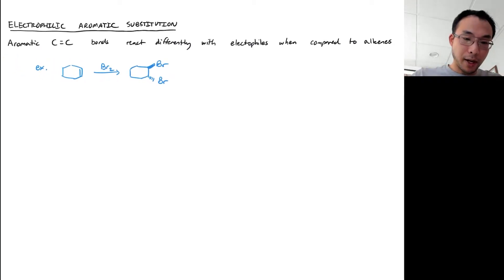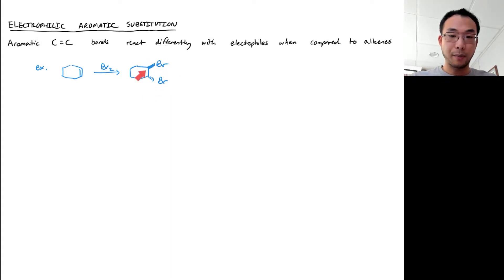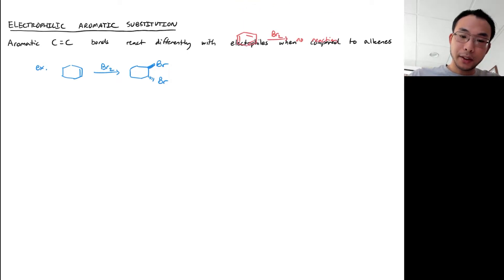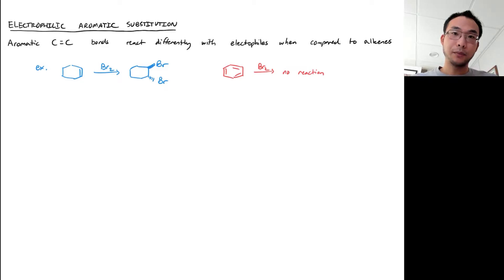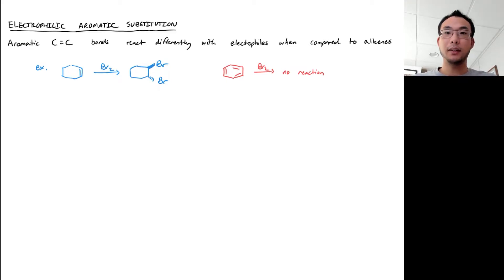To remind us, if you take a molecule like cyclohexene and react it with an electrophile — bromine in this case — you end up doing overall an addition to the alkene, making a vicinal dibromide. If we do the exact same reaction using benzene as the nucleophile, benzene does not react with Br2 to a significant extent, so we consider this a case of no reaction. This tells us right away that carbon-carbon double bonds in aromatic molecules like benzene are different from those in regular alkenes.